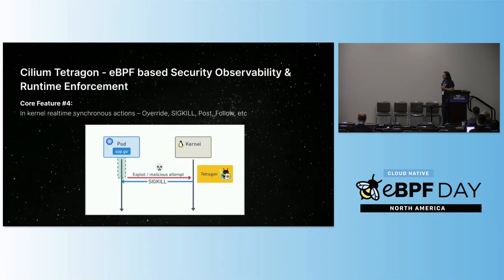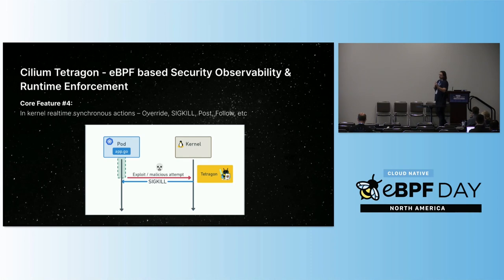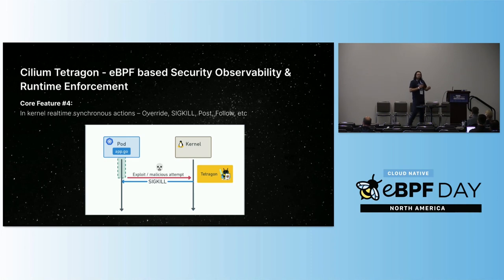The last thing that's really interesting about Tetragon is it performs actions inside the kernel, inline with the call. If you want to kill a process, we kill it from the kernel side — there's no delay from when the event gets pushed from kernel to user space, through some user space logic, and then maybe later decides it was bad. By then it's likely already done the thing you were trying to stop. Tetragon detects that it's trying to open a file or network connection we don't like and kills the process right away.